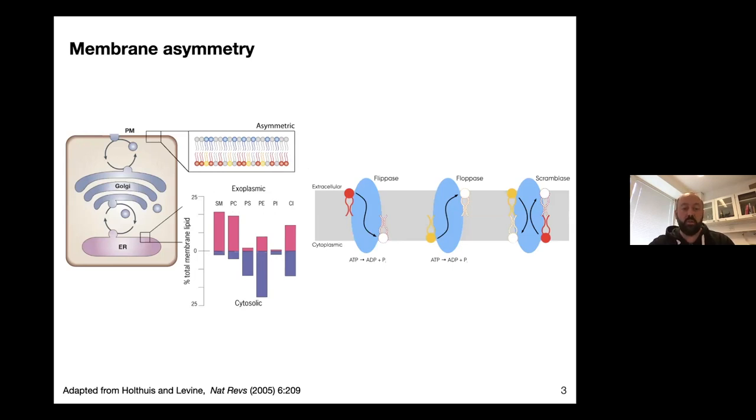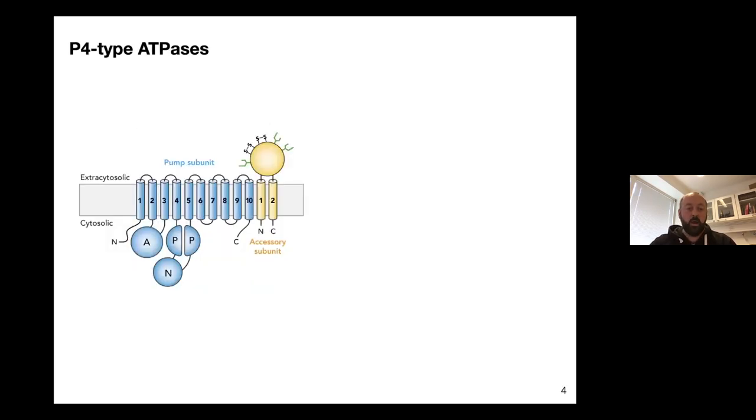There are three different protein families that move lipids across the membrane. You have the scramblases which drive bidirectional movement across the membrane, typically calcium activated. You have the lipid floppases which are from the ABC transporter family that drive the extracellular export of lipid to the outer leaflet. And you have the so-called lipid flippases which drive the inward directed translocation of lipids. Both lipid flippases and floppases are powered by ATP, and the lipid flippases belong to quite a broad family of membrane transporters called P-type ATPases.